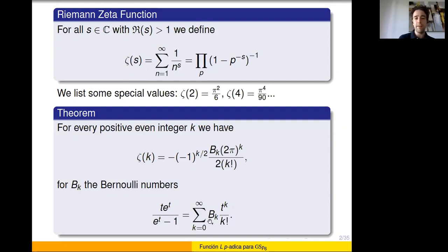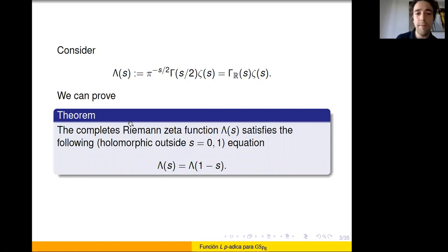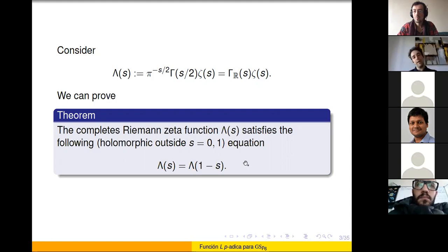The Bernoulli numbers are defined by taking the Taylor expansion of t over (e^t - 1). They are 0 when k is odd and rational numbers when k is even. These are not the only properties of the Riemann zeta function that we care about today. We consider the completed Riemann zeta function, which adds at infinity the real gamma factor: gamma of s/2 times pi to the minus s/2. This function is holomorphic almost everywhere and satisfies a nice functional equation relating s to 1 minus s.